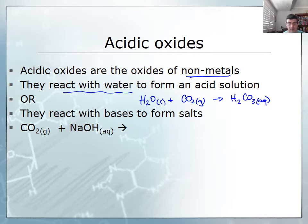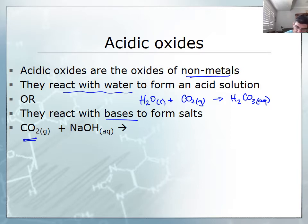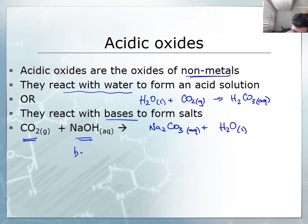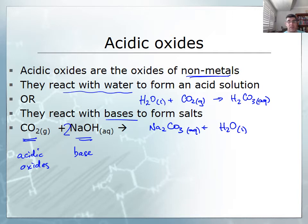Another way of looking at this is to see how acidic oxides react with bases. If we have an acidic oxide reacting with a base, we get a neutralization reaction. In this case we could form a sodium carbonate salt in aqueous solution and water. If water is being produced, that is another indicator that this substance must be acting in some way as an acid.